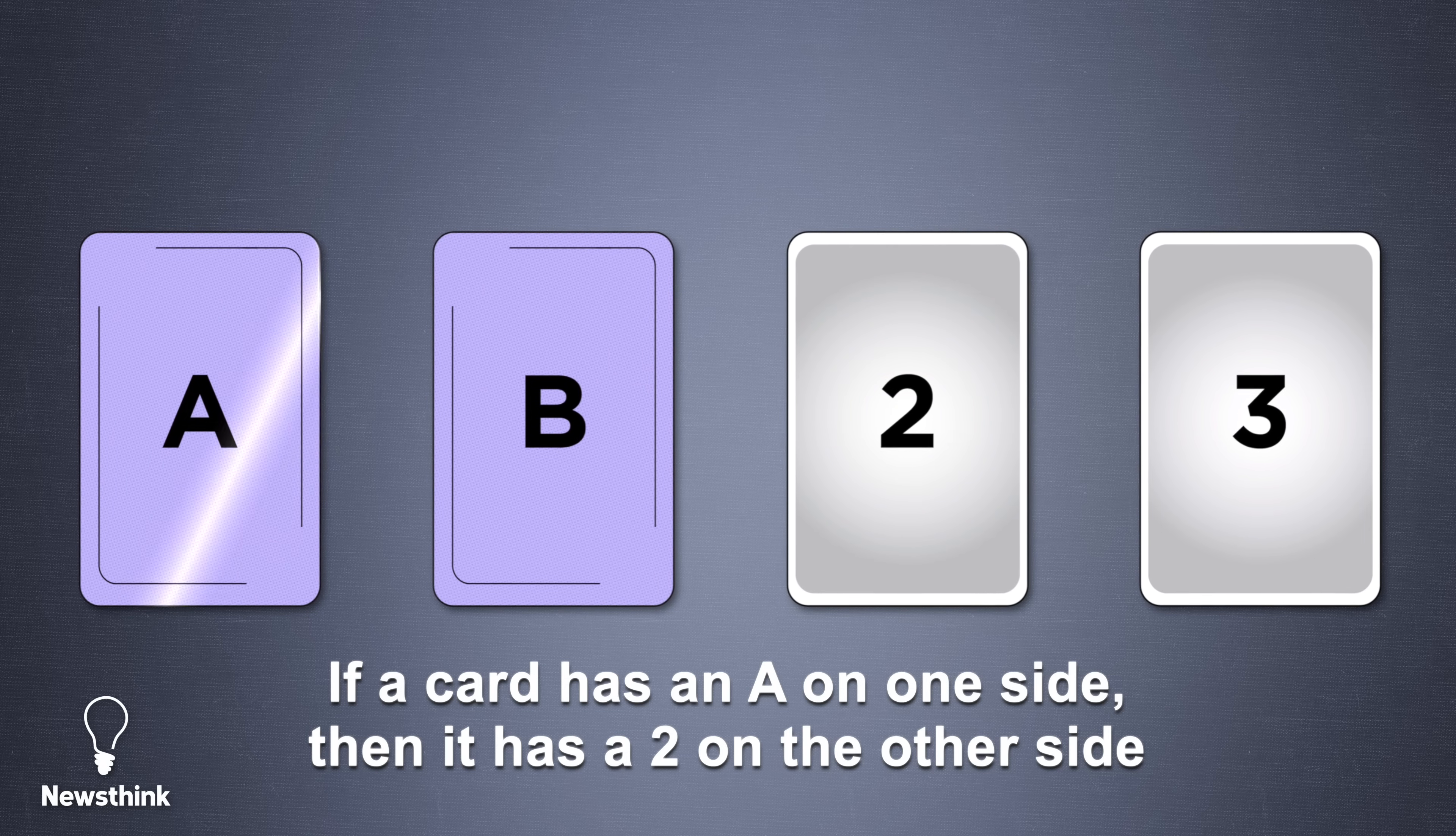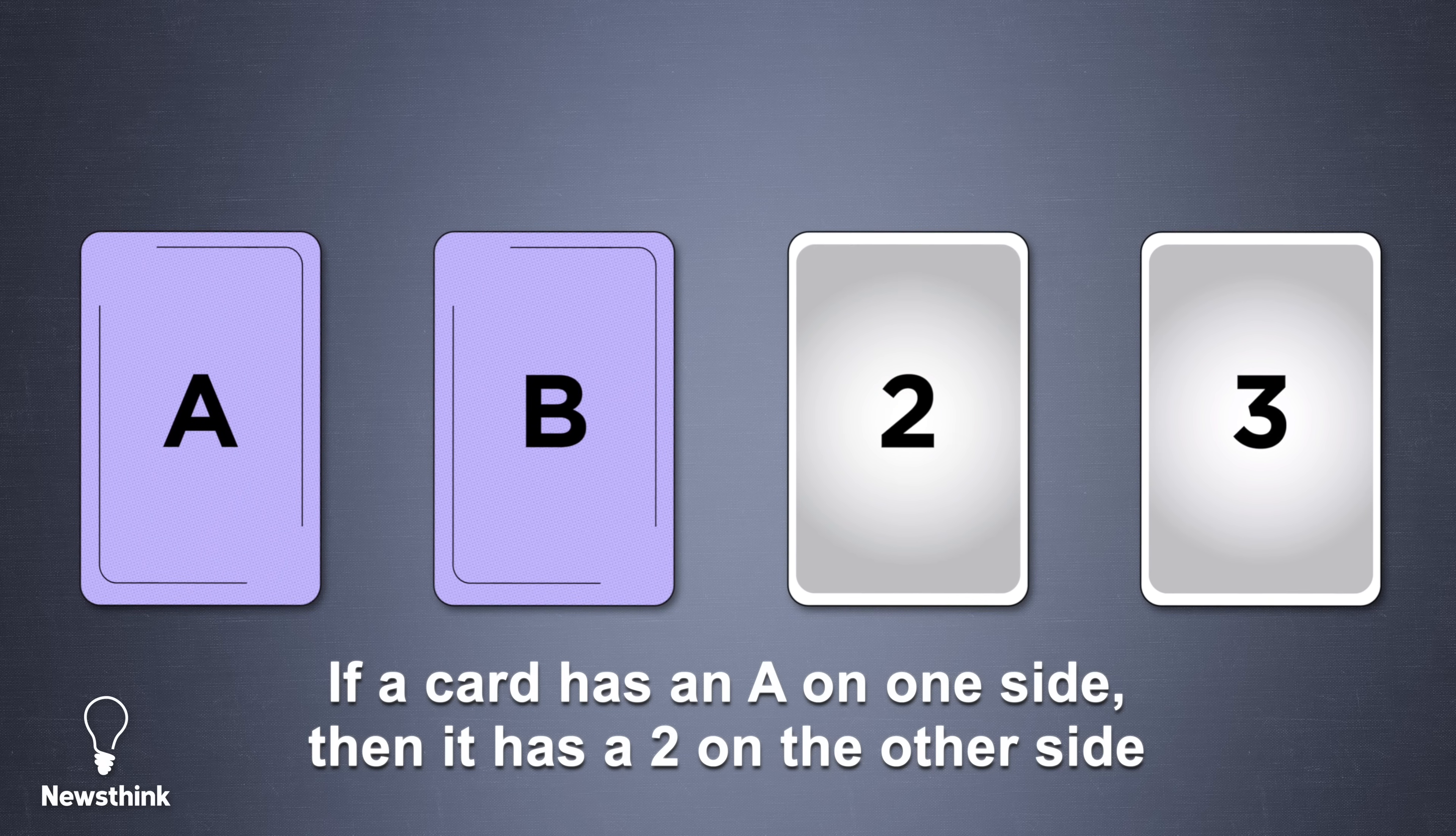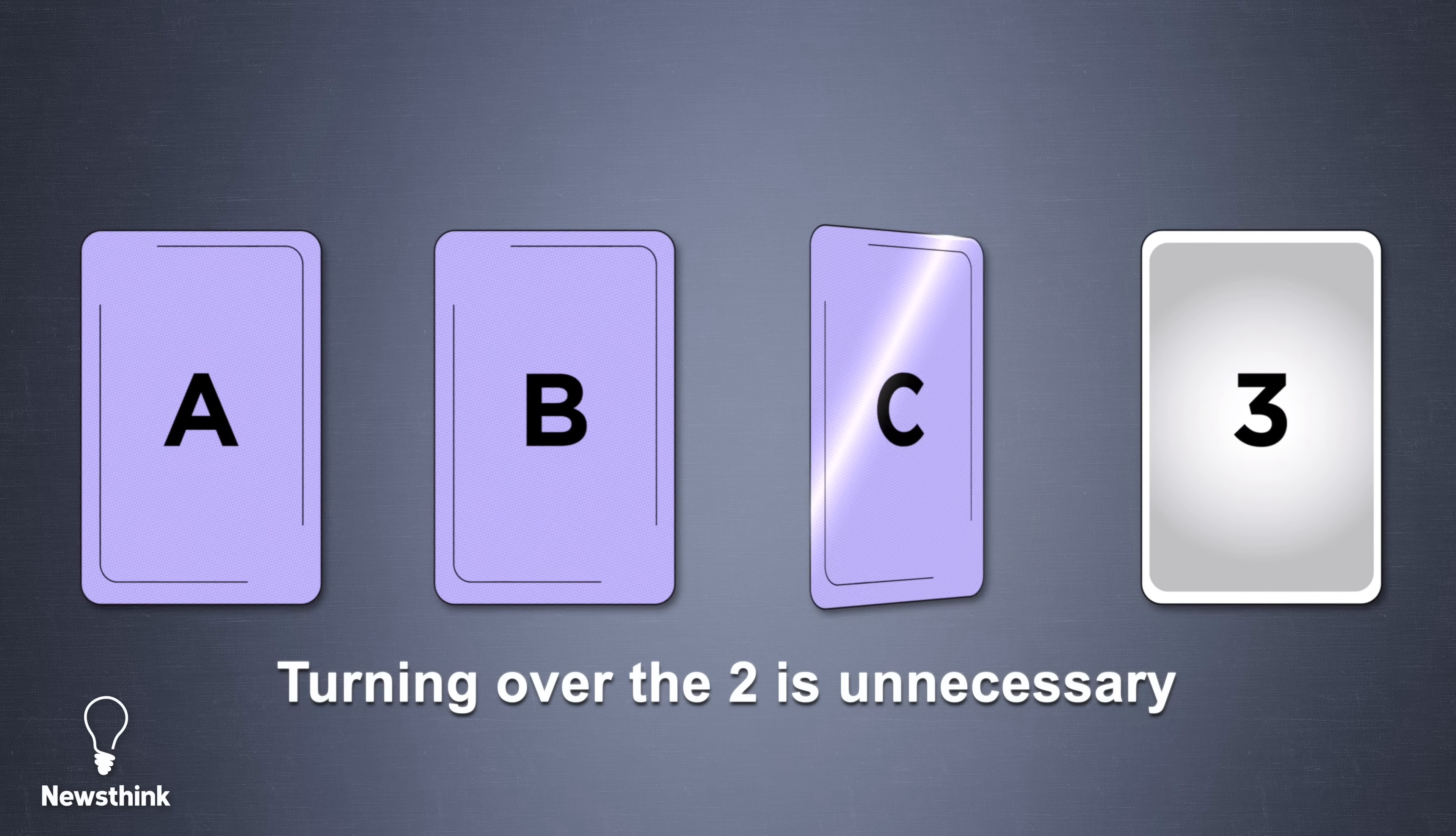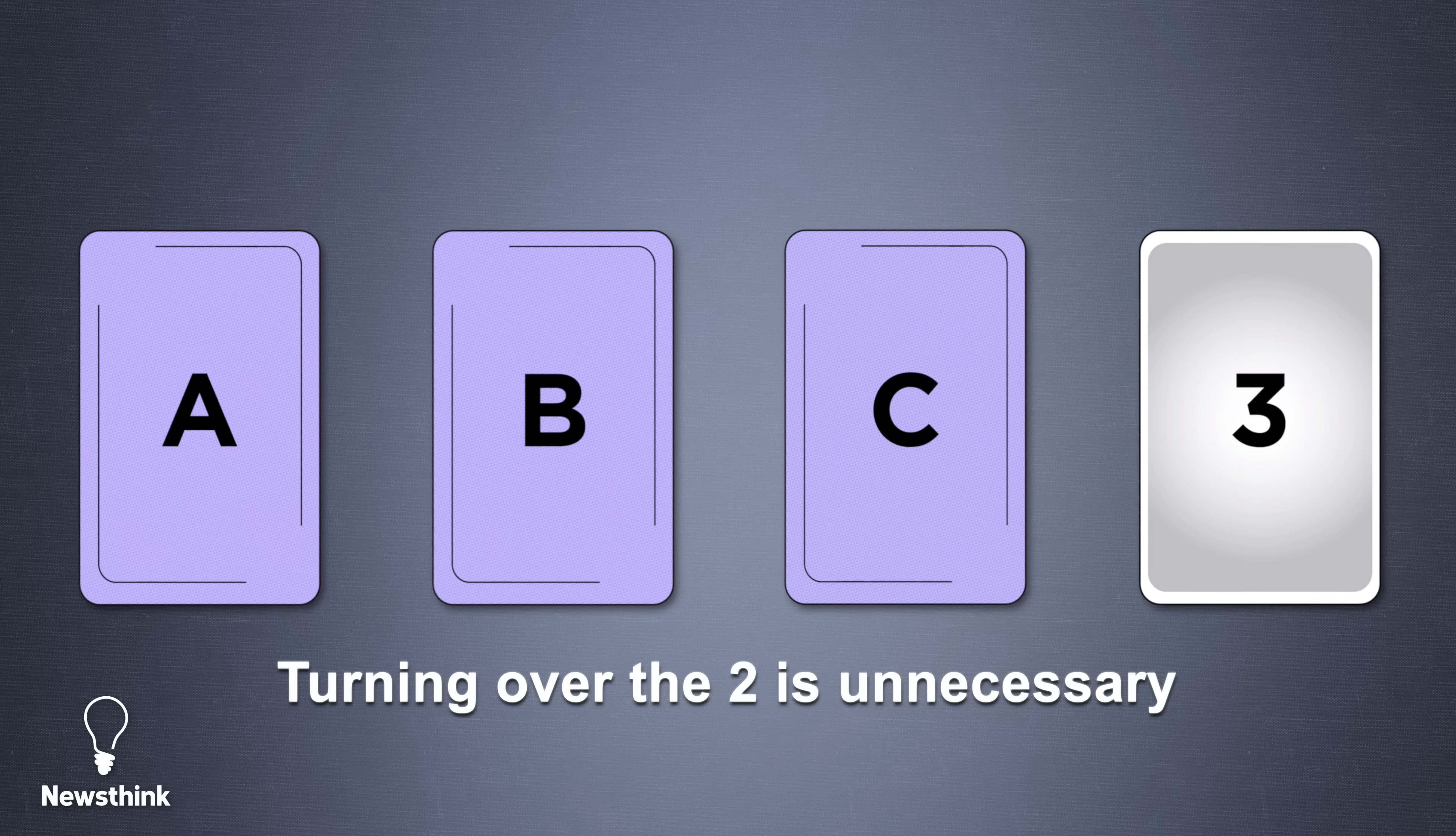Many people would select the A card and the 2 card. However, turning over the 2 is unnecessary because the rule doesn't say that all cards with 2 must have the letter A on the other side.